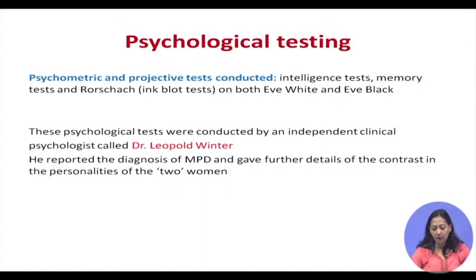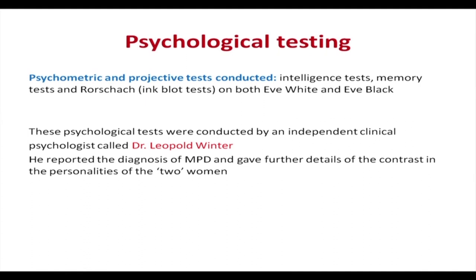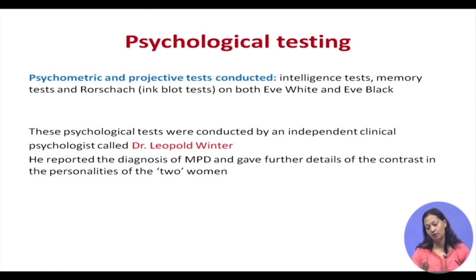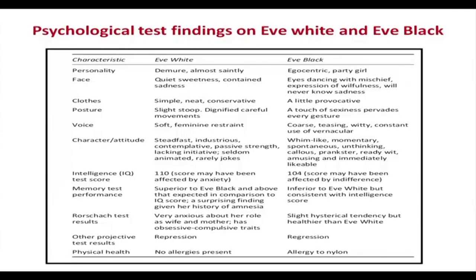Thigpen and Cleckley went about seeing Eve White and Eve Black in a very scientific manner and conducted psychometric and projective tests. This was done by an independent clinical psychologist named Dr. Leopold Winter. Dr. Winter reported the diagnosis of MPD and identified contrasting traits in the two women — done blindly, so he was not initially aware it was the same woman.